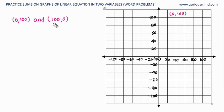The second point is x is 100. So plus 100 we will move here, y is 0 so we don't move vertically. So we get this point at (100, 0).